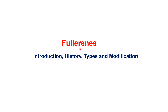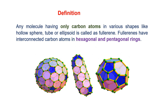This video will be about introduction, history, types and modification of philorenes. Any molecule having only one carbon atom in its various shapes like holosphere, tube or ellipsoid are called philorenes.